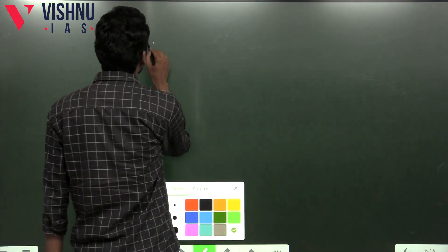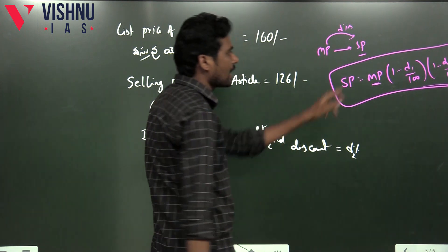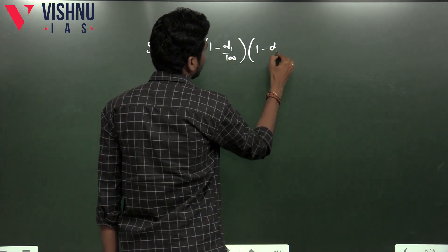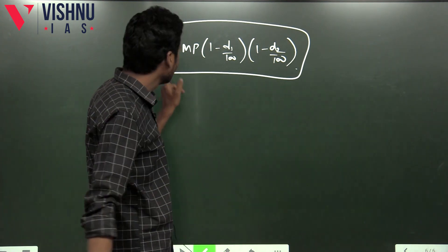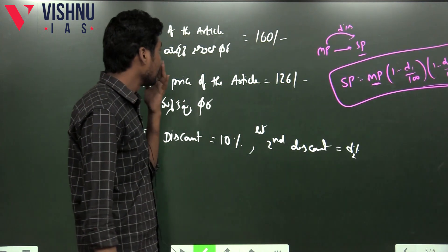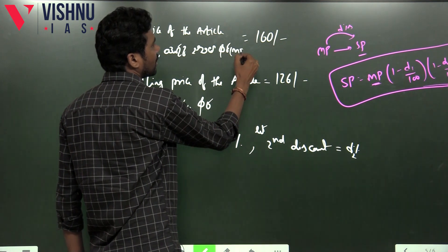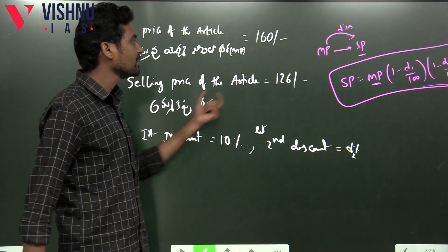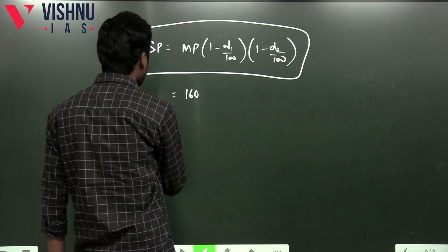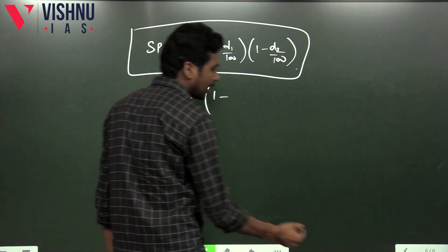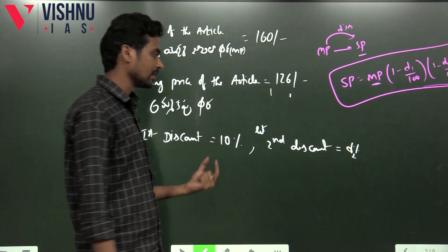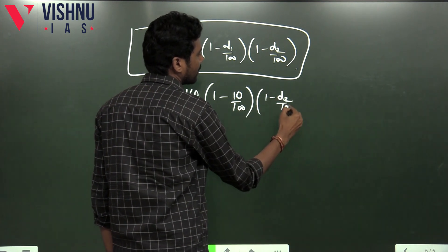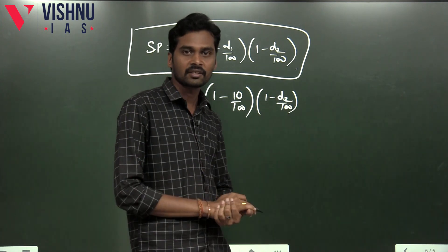The formula is: Selling price is equal to Markup price (list price) into (1 minus D1 by 100) into (1 minus D2 by 100). SP means selling price, MP means markup price or list price. So MP is 160. Selling price is 126. We substitute: 126 equals 160 into (1 minus D1 by 100) into (1 minus D2 by 100). D1 is the first discount of 10%, so substitute D1 as 10.